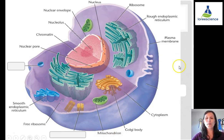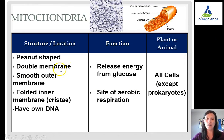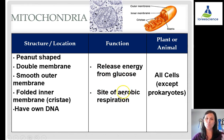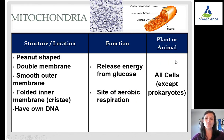The mitochondria, or mitochondrion, is a double-membrane organelle — smooth on the outside with a folded inner layer. The folds are called cristae. Uniquely, it has its own DNA. Its job is to release the energy stored in glucose; it is the site of aerobic respiration, using oxygen to break down glucose to create energy. It is the energy powerhouse of cells, found in all cells except prokaryotes.